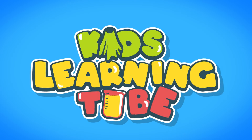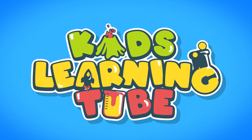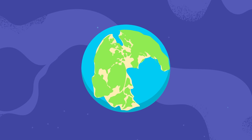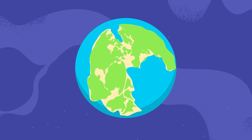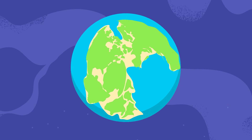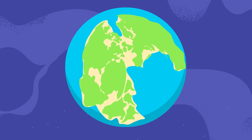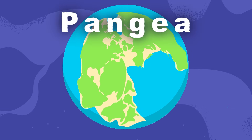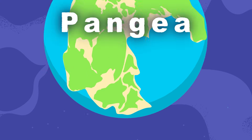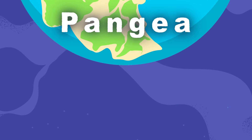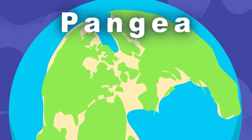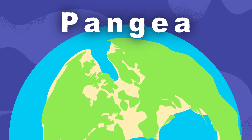Kids learn it too! This is how our world looked before the continental drift. It went by the name of Pangaea according to scientists. Pangaea was all the continents mashed up as one. Let's look at where each modern continent fits in the bunch.